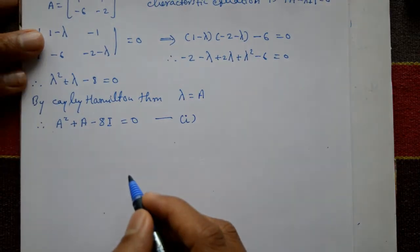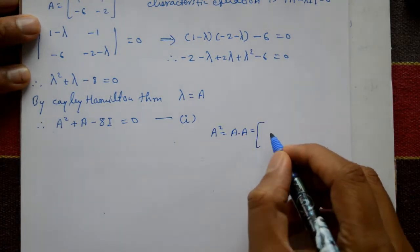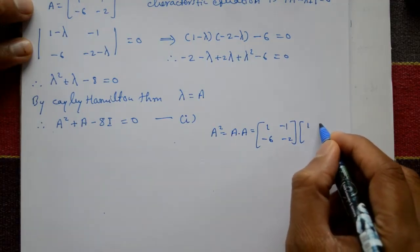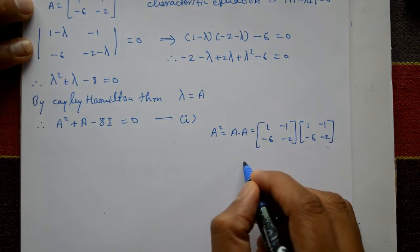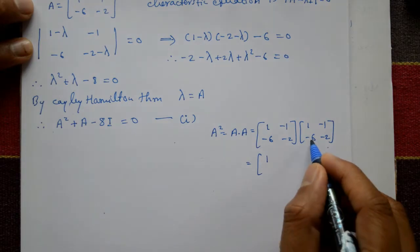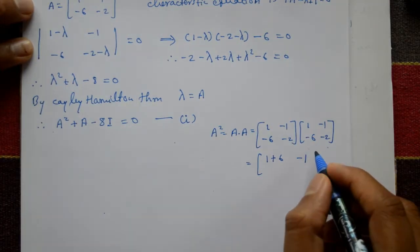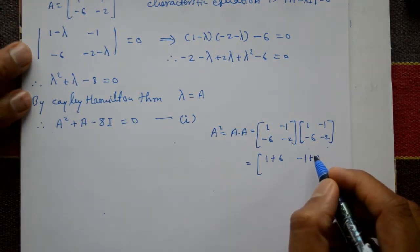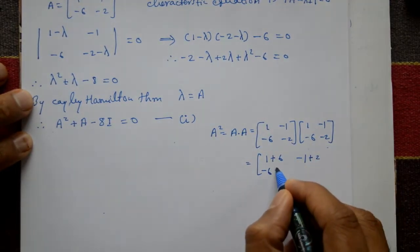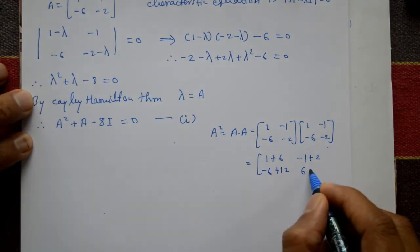A² = A × A. Multiplying [[1,-1],[-6,-2]] by [[1,-1],[-6,-2]] using row-into-column multiplication: first row, first column: 1×1 + (-1)×(-6) = 1 + 6 = 7. First row, second column: 1×(-1) + (-1)×(-2) = -1 + 2 = 1. Second row, second column: (-6)×(-1) + (-2)×(-2) = 6 + 4 = 10.